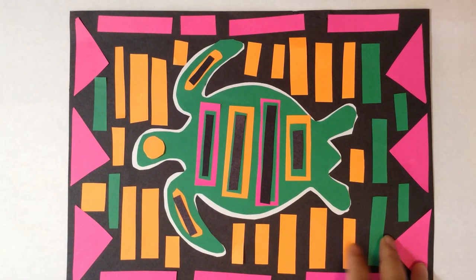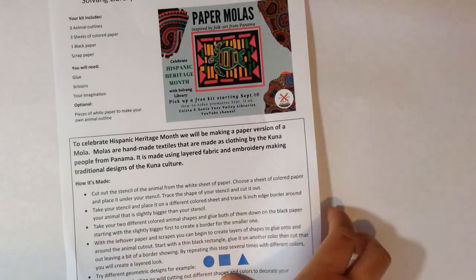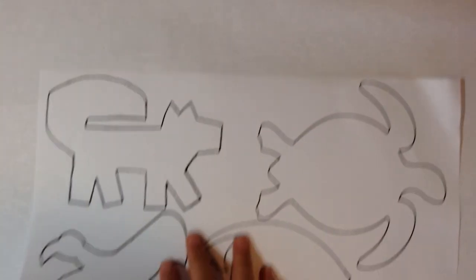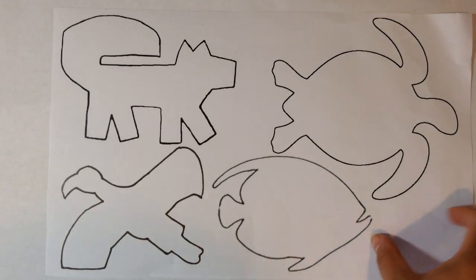We will be making a simpler version using paper. Each kit comes with a set of instructions, animal outlines that you can use to cut out to make your stencils. Or if you wish to make your own, grab a blank piece of paper and draw whatever you like.